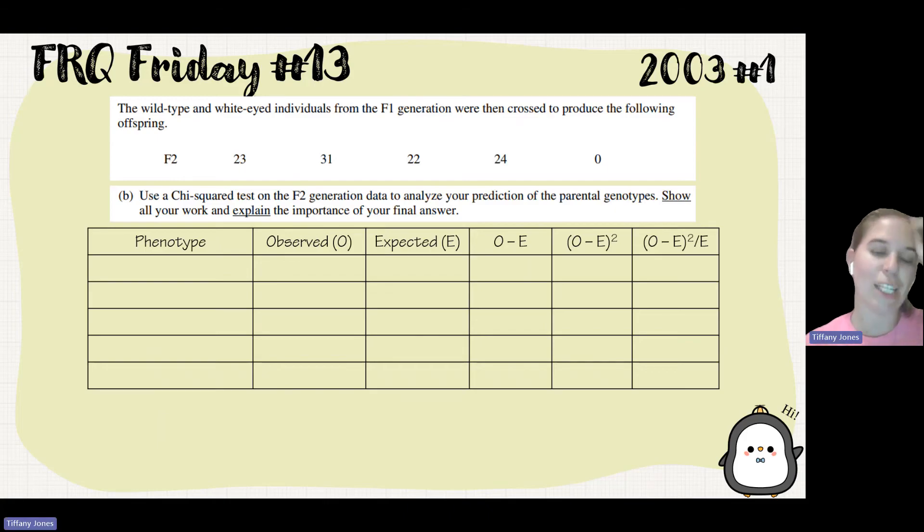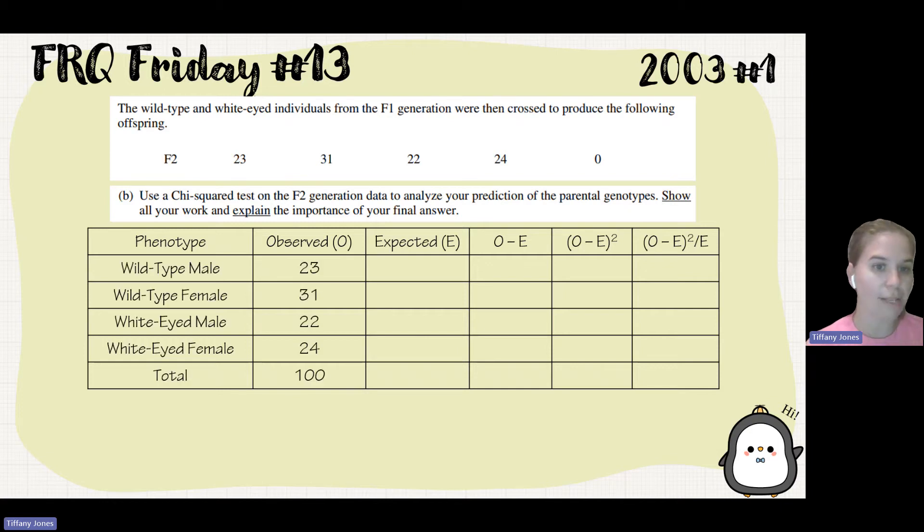So next thing you have to do is a chi square. Now, chi square is one of the things that's on our science practices, so I want to make sure that we did talk about chi square. So there's four different phenotypes we could have with this F2 generation. We could either have the wild type male, which had 23, the wild type female, which had 31, the white-eyed male, which was 22, and the white-eyed female, that was 24. You're going to add all these numbers up, and that equals 100.